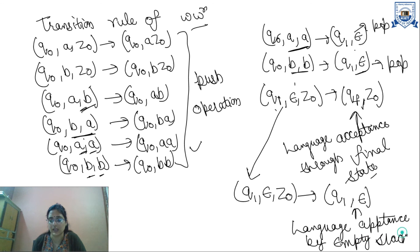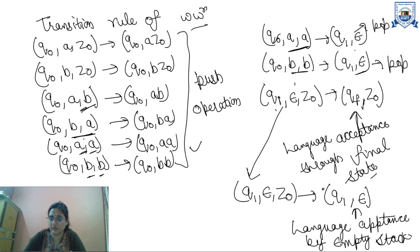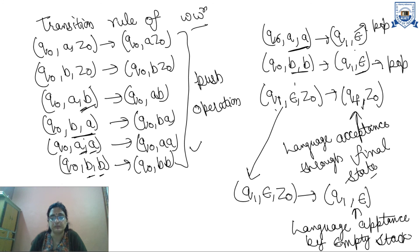Please remember that for both deterministic and non-deterministic pushdown automata, language acceptance can be done through two ways: either through the final state, or by empty stack. For acceptance by final state, you reach the final state with Z0 on top of the stack. For acceptance by empty stack, you remove Z0 from the stack, leaving the stack empty.